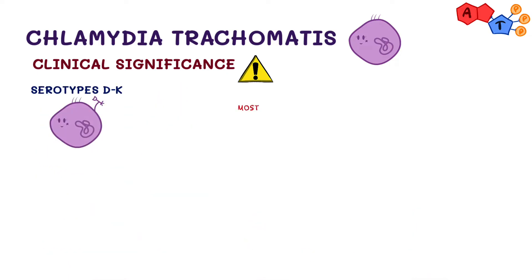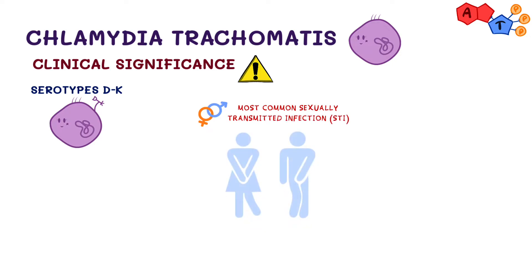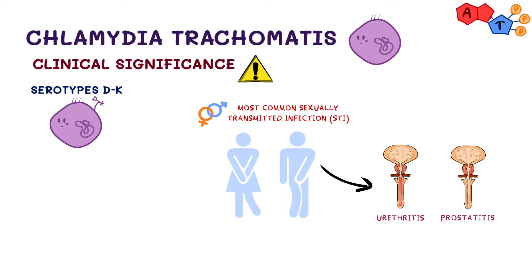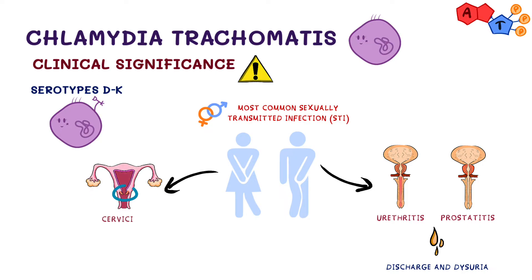Serotypes D to K are the most common STI — sexually transmitted infections — in men and women. In men, it commonly infects the urethra, resulting in urethritis, and also infects the prostate, resulting in an inflammation known as prostatitis. The patient will present with discharge and dysuria.